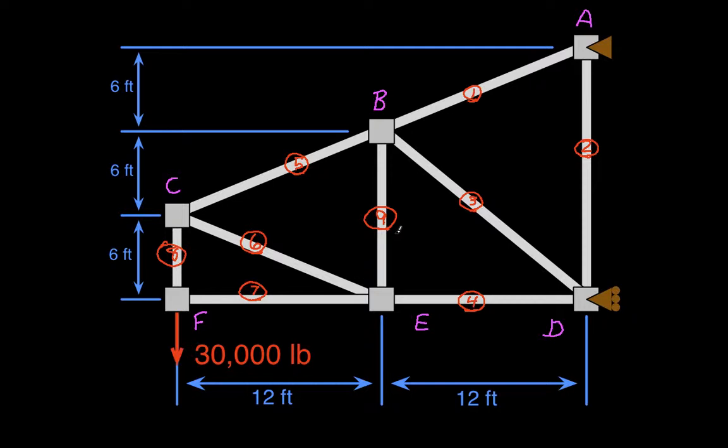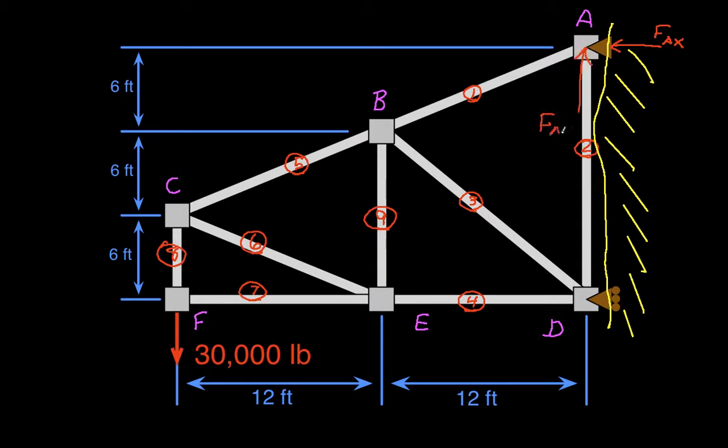So the first thing we need to do is we need to find the reaction forces. We'll have, if you look at the way our truss is attached to some solid surface over here. Okay, you'll notice that we need to have a horizontal force FAX, a vertical force FAY, and another horizontal force on the bottom. We have no vertical force because this joint is on rollers. We'll call this FDX.